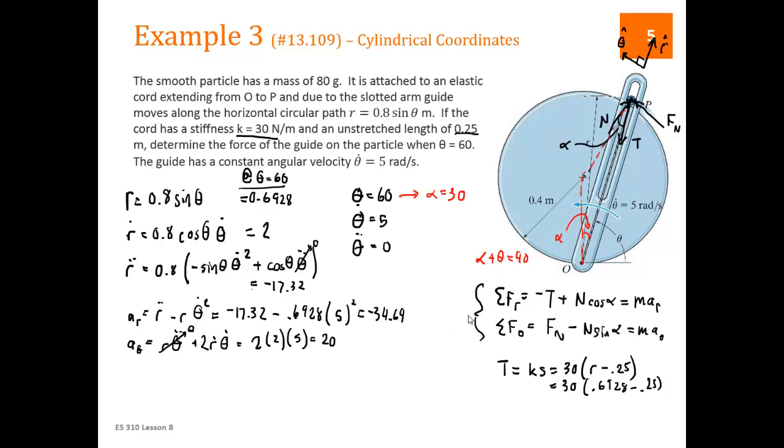Let's take these two equations. We get negative 30 times 0.6928 minus 0.25, that's T, plus N, which we don't know, times cosine of 30, is equal to mass, which is 0.08, 80 grams. And we put masses in kilograms. Times AR, which is negative 34.64. N is the only unknown there. So we get N is equal to 12.14 Newtons. That's part of our answer.